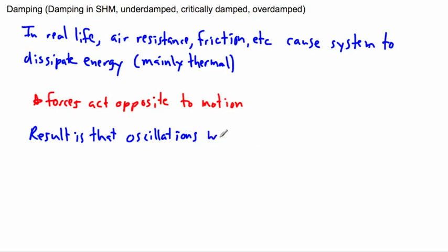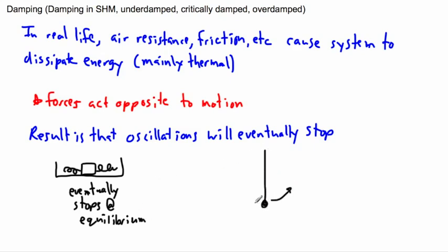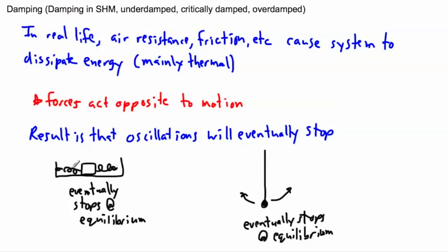The oscillations will get smaller and smaller until they eventually stop. So you could have a situation with a spring and mass, like we were looking at before — it eventually comes to rest at equilibrium. Just like if you have a pendulum going back and forth, it eventually stops at equilibrium. Any real-life situation — it doesn't keep oscillating forever. Friction and air resistance will cause it to stop.